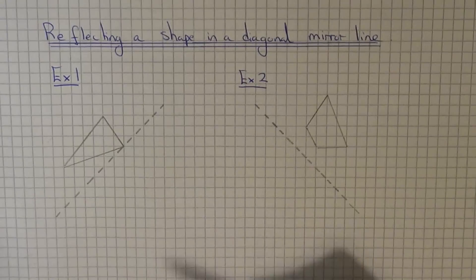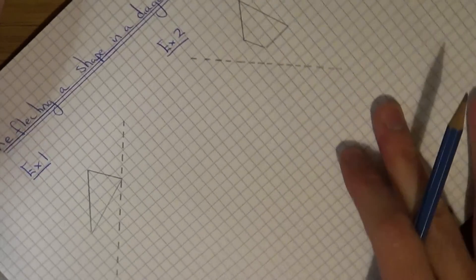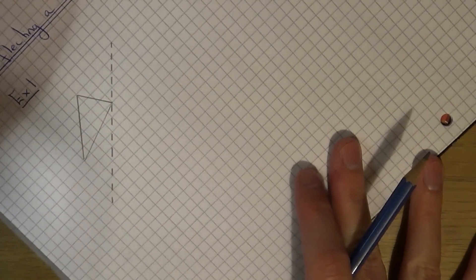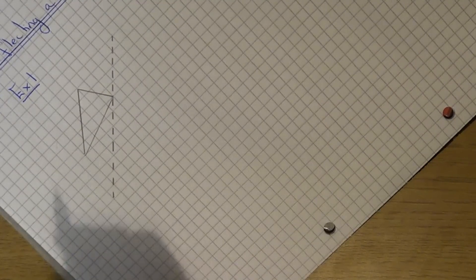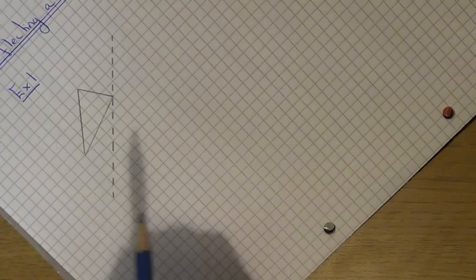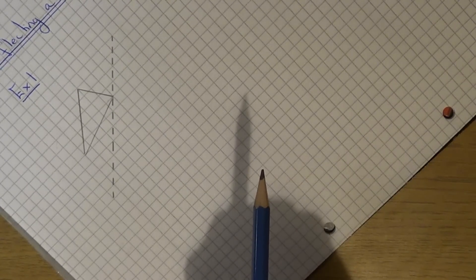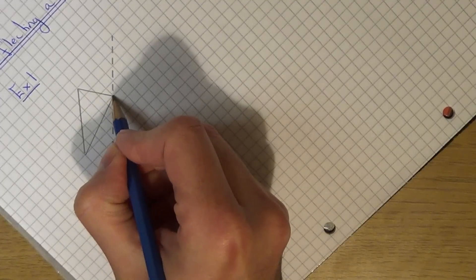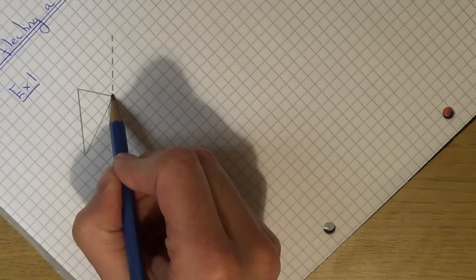The best way to do it is to turn your page around so the mirror line is directly in front of you. So if you just turn it around like this. What you need to do is count your distance of each corner to the mirror line, and it is going to be the same distance on the other side. Let's start with the easiest point, which is this corner here — it is on the mirror line so it will stay still.